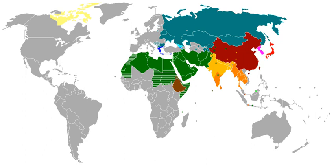Canadian Aboriginal syllabics can be considered abugidas, although they are rarely thought of in those terms. The largest single group of abugidas is the Brahmic family of scripts, which includes nearly all the scripts used in India and Southeast Asia. The name abugida is derived from the first four characters of an order of the Ge'ez script used in some contexts, and was borrowed from Ethiopian languages as a linguistic term by Peter T. Daniels.